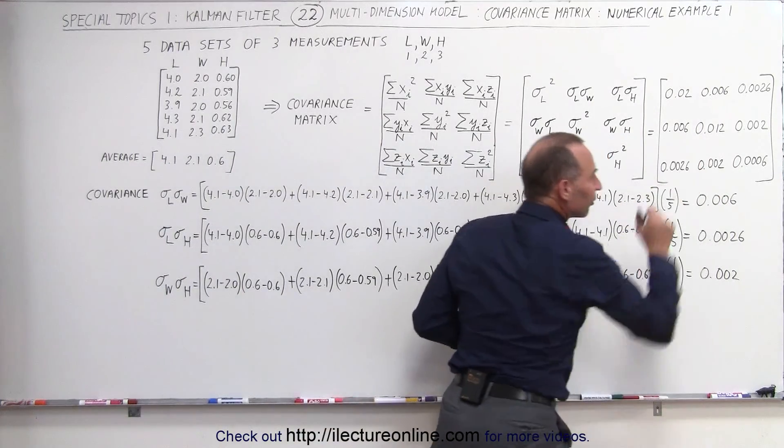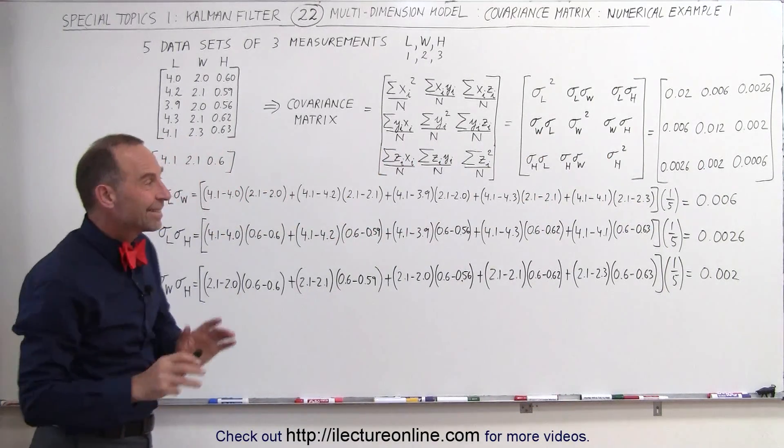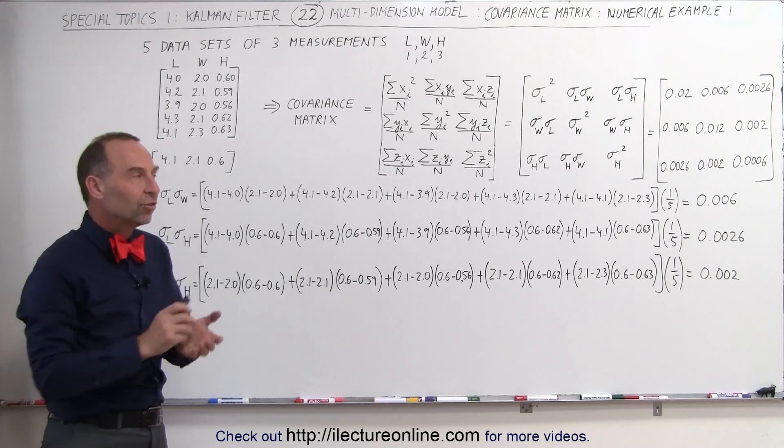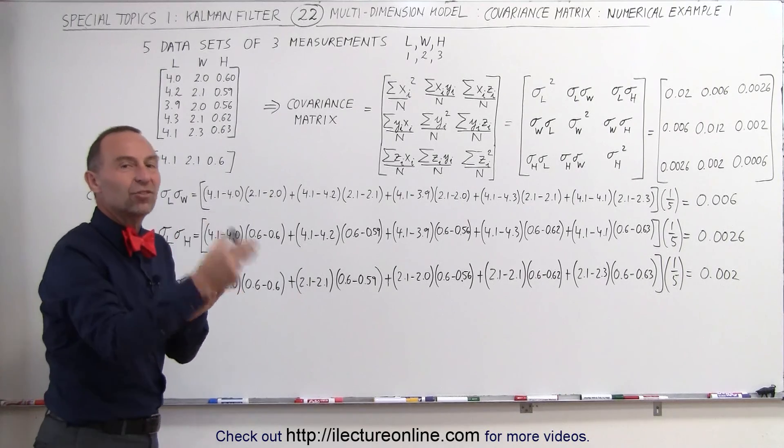So what do we use this covariance matrix for? Remember, that represents the state covariance matrix. This is the matrix that we use to adjust the predicted state.